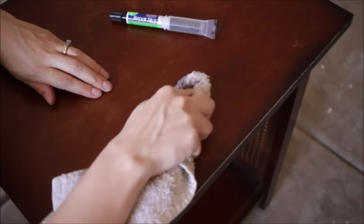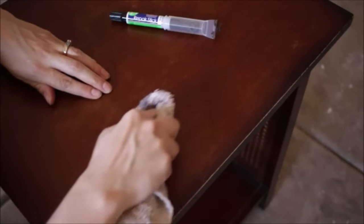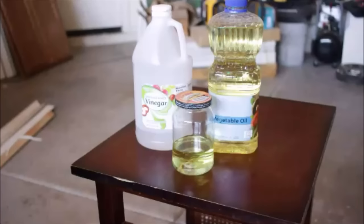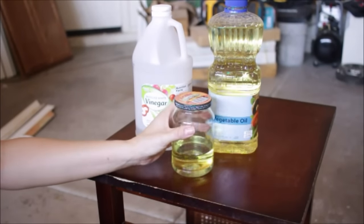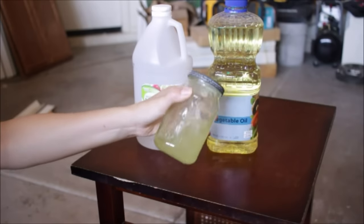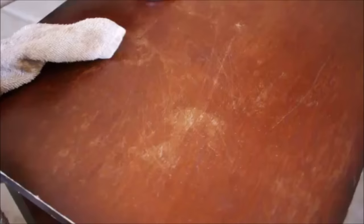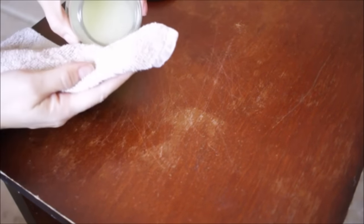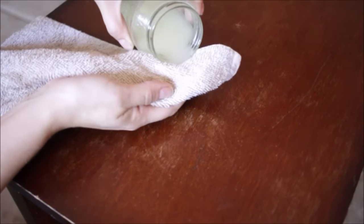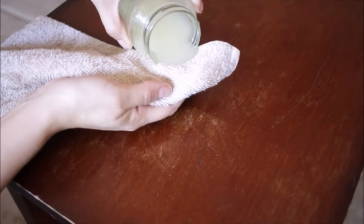If your furniture has lots of little scratches all over it, you might be able to fix it with some things that you have in your pantry. Mix three parts cooking oil and one part vinegar in a jar and give it a good shake to make sure it's mixed. Use a soft clean rag to rub the oil mixture over the surface of your furniture. It might smell like a salad for a little while, but the scratches will disappear.